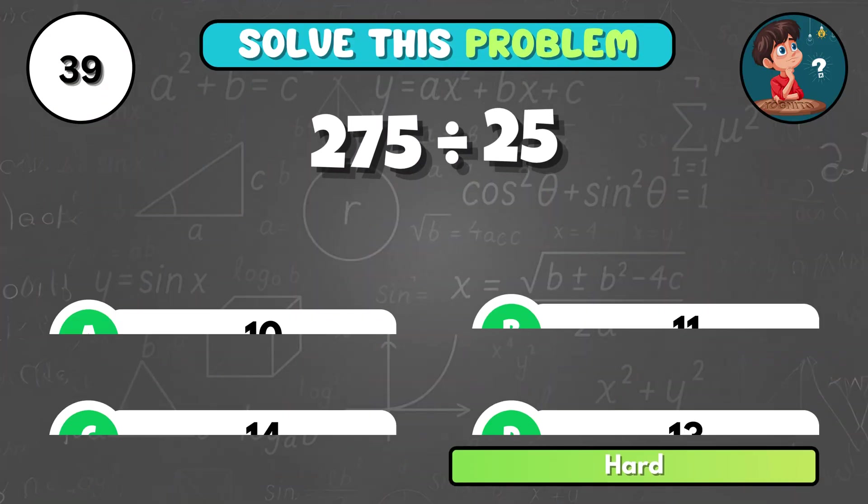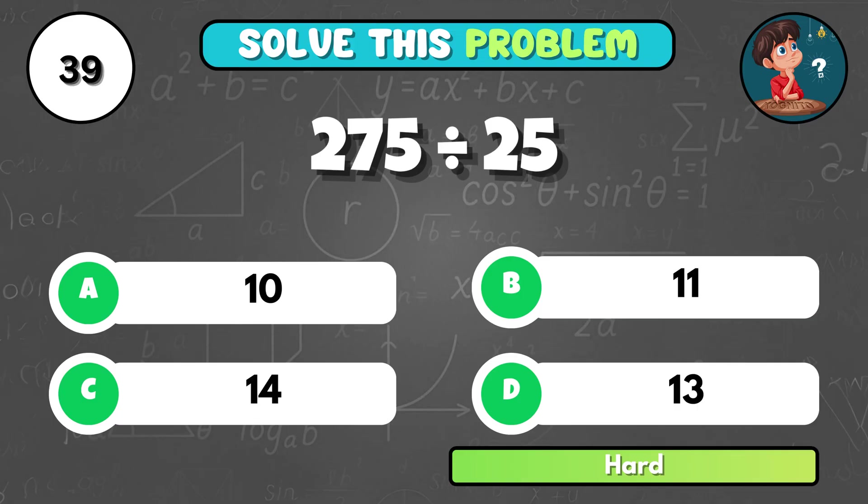If 275 is divided into equal groups of 25, how many groups? It equals B, 11.